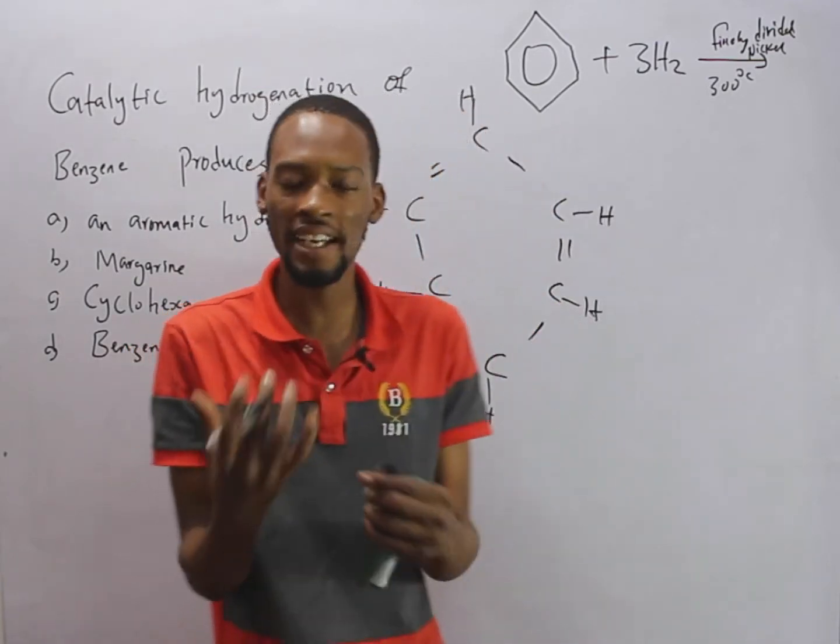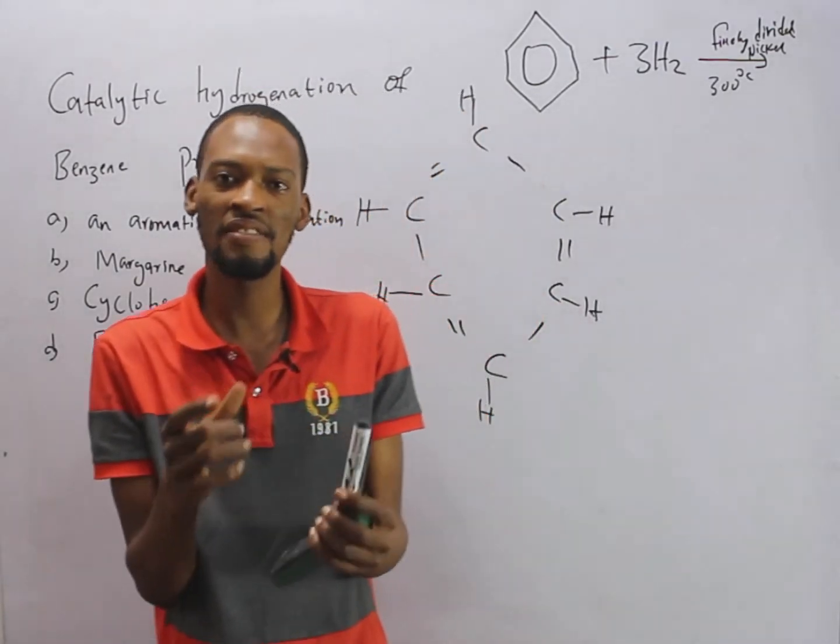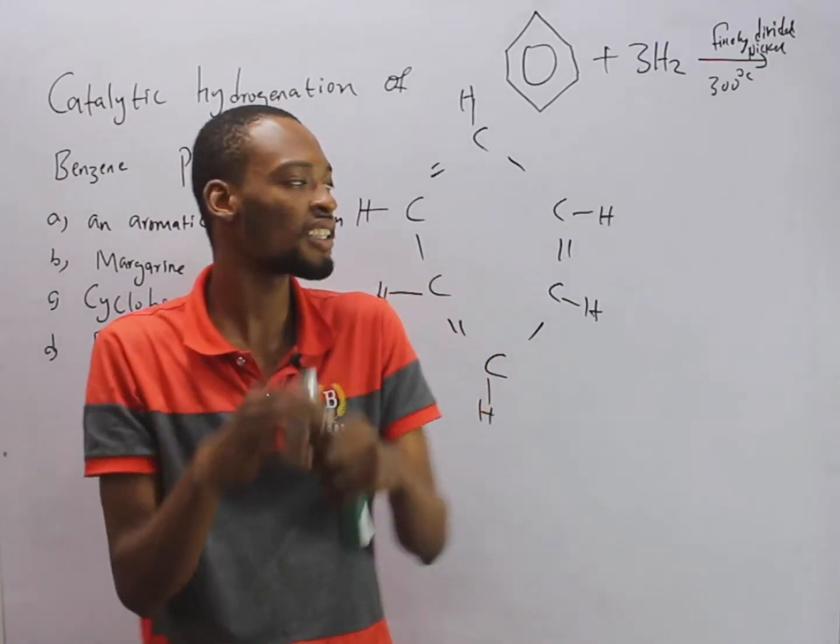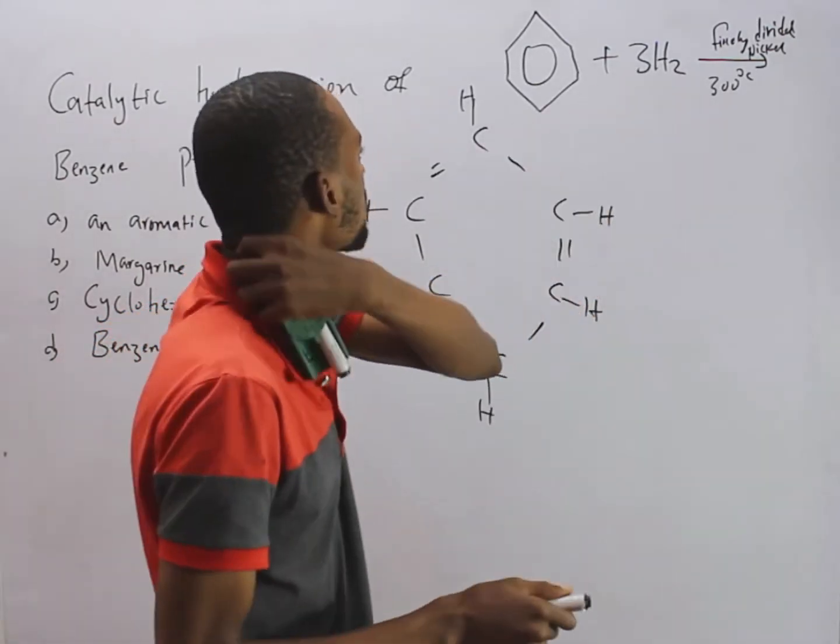Let's say at 300 degrees Celsius or so. Now, when you say finely divided, once a solid is finely divided, it means powdered form. So finely divided nickel means smooth nickel or powdered nickel. With this condition,